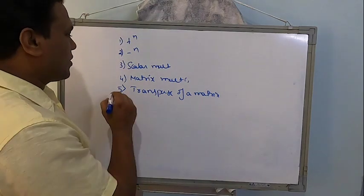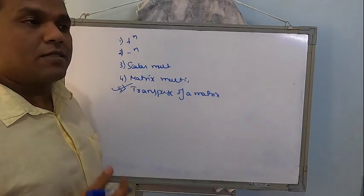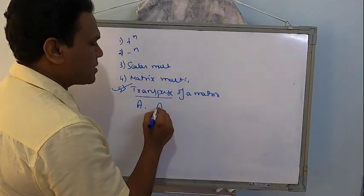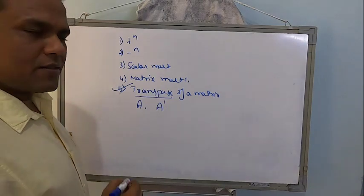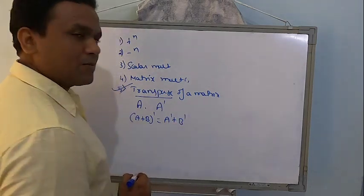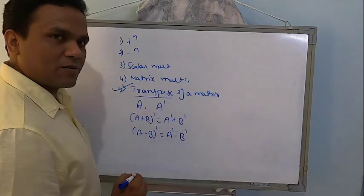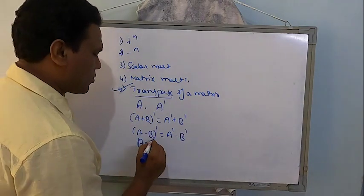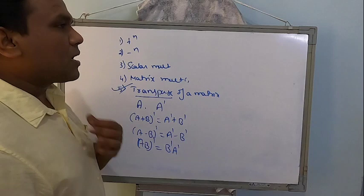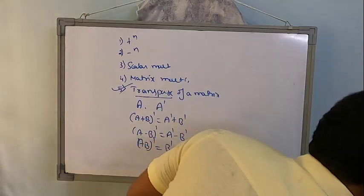The transpose of a matrix means: given a matrix, when you interchange the rows and columns, the resultant matrix is called the transpose. If A is a matrix, its transpose is denoted by A'. Standard properties: (A+B)' = A'+B', (A-B)' = A'-B', and (AB)' = B'A'.